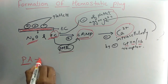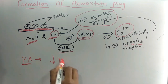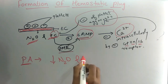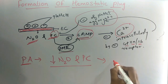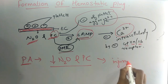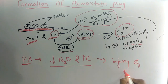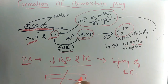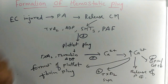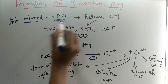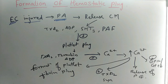For platelet aggregation to occur, there should be a decrease in nitric oxide and prostacyclin. These levels are decreased when there is injury to the endothelial cell. When the endothelial cell is not intact or is injured, levels of nitric oxide and prostacyclin decrease, and platelet aggregates are released.